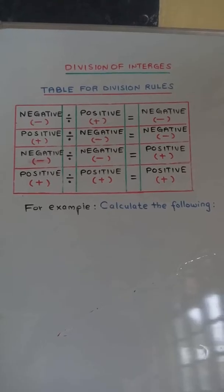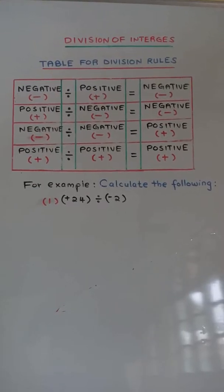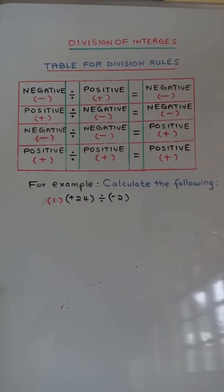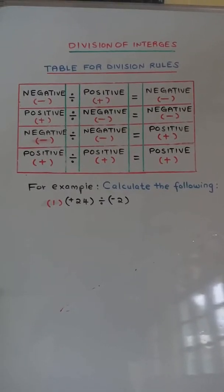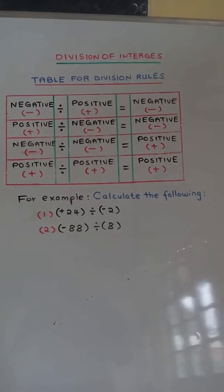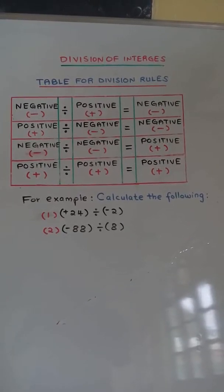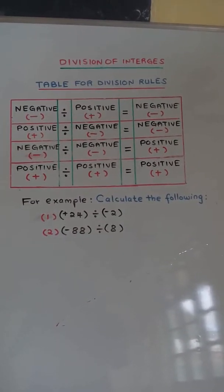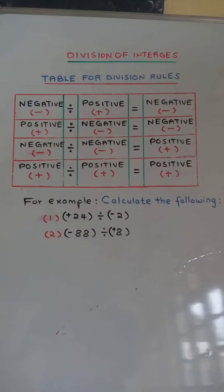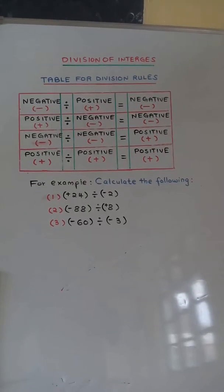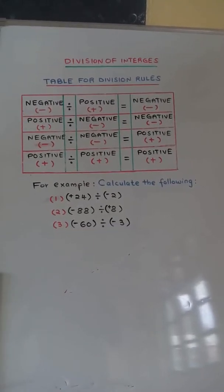For example, calculate the following. Number 1: positive 24 divided by negative 2. Number 2: negative 88 divided by positive 8.